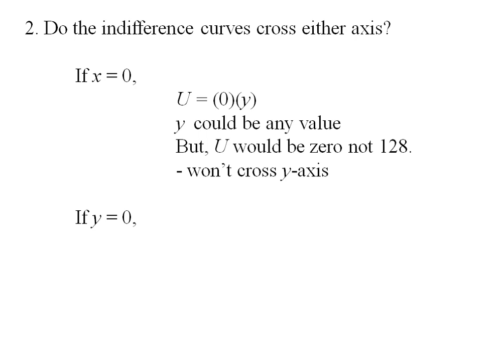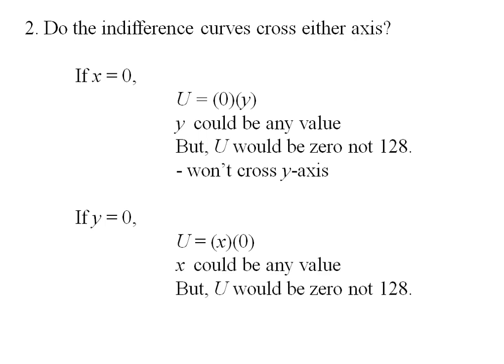Similarly, we'll say what if y is zero? Let's look to see if we're going to cross the x-axis. I'll plug in zero for y. Again, x can be any value, but I'm going to get a value of zero for utility, not 128, so I know we're not going to cross the x-axis. So I've got a downward sloping indifference curve that won't touch either axis.